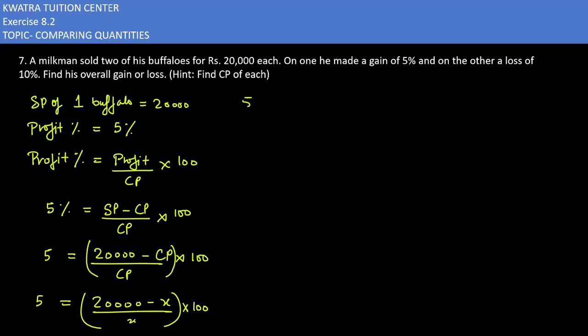Take x to the left side. It will give you 5x equals 100 times the right side, 20,000 minus x. 5 and 100 will be cancelled and you get x over 20. Taking x to the left side gives plus x, and right side is 20,000.